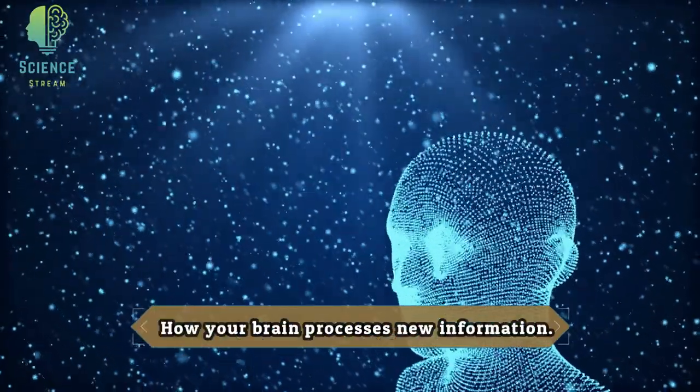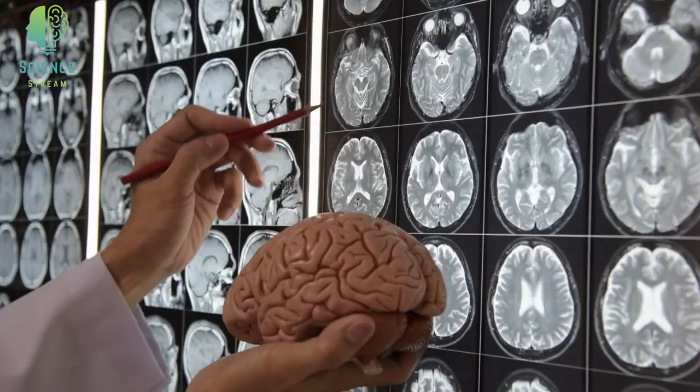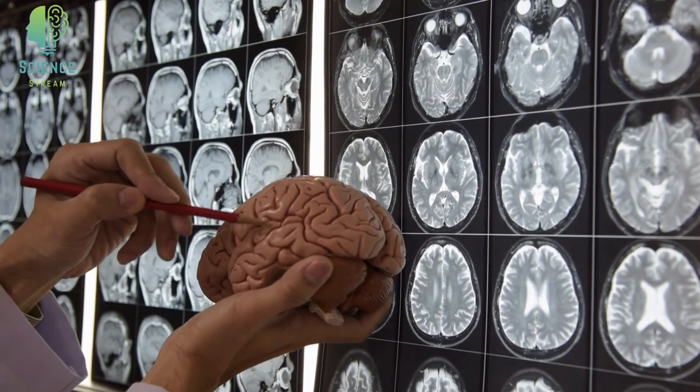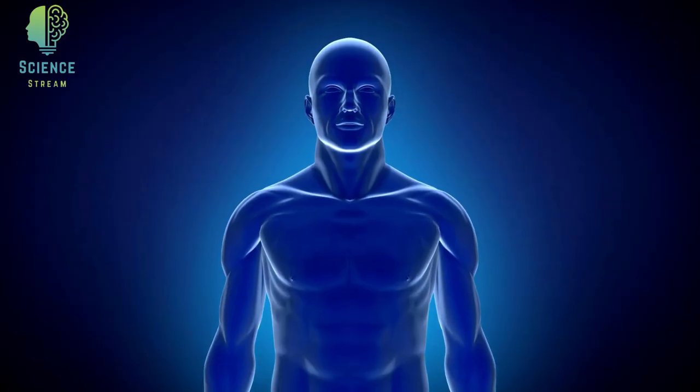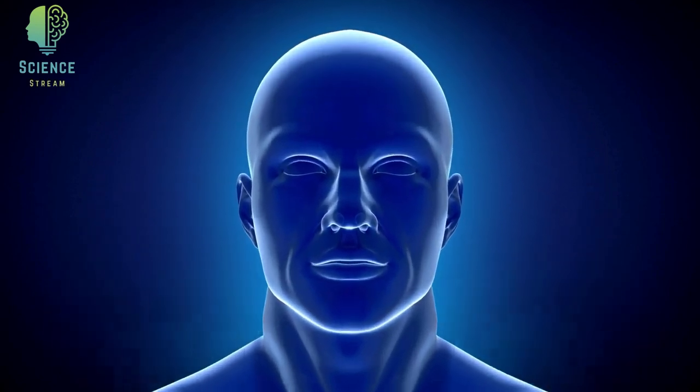How your brain processes new information. Although there are various theories regarding how information is processed in the brain, most experts agree that the process involves three important stages.